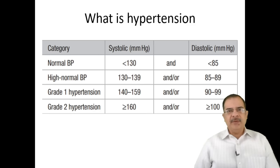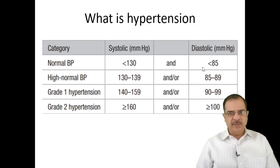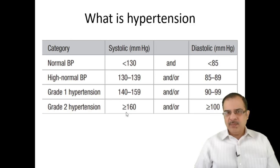Based on International Society of Hypertension guidelines: normal blood pressure is systolic BP less than 130 and diastolic BP less than 85 — both values must be fulfilled. Elevated blood pressure is systolic 130 to 139 and/or diastolic 85 to 89. Grade 1 hypertension is systolic 140 to 159 and/or diastolic 90 to 99. Grade 2 hypertension is systolic ≥160 and/or diastolic ≥100.